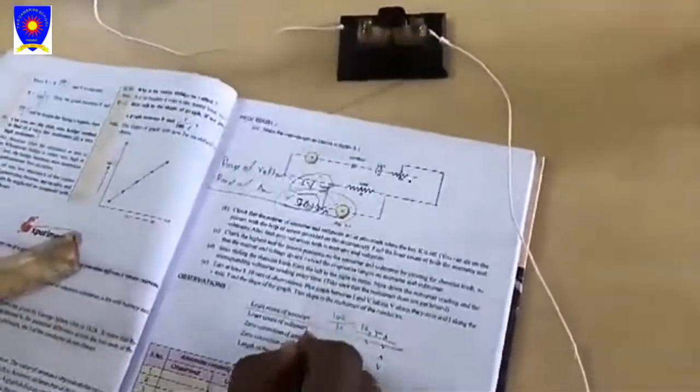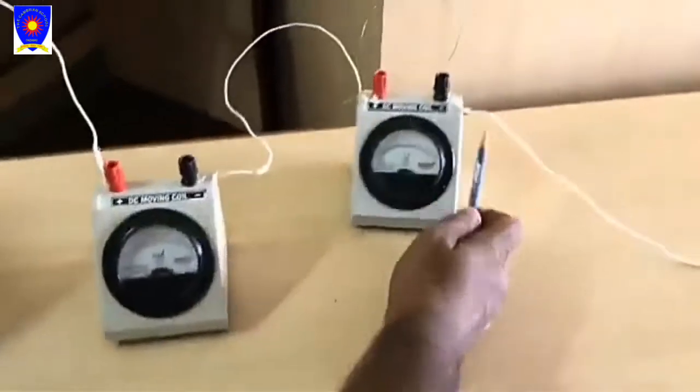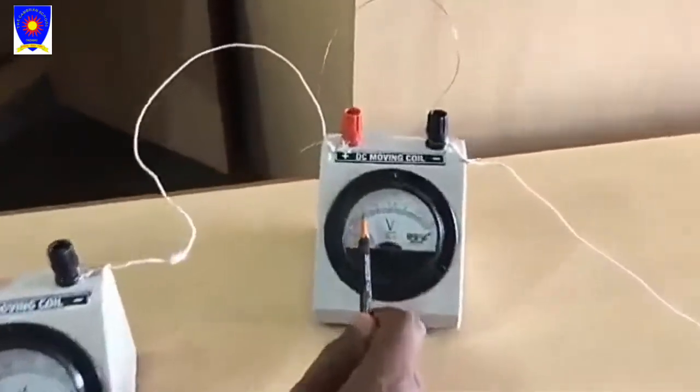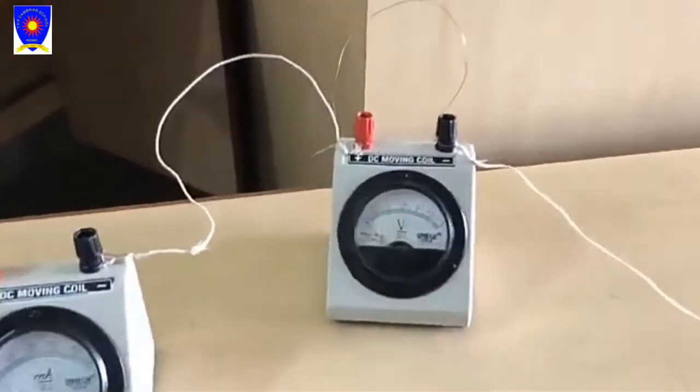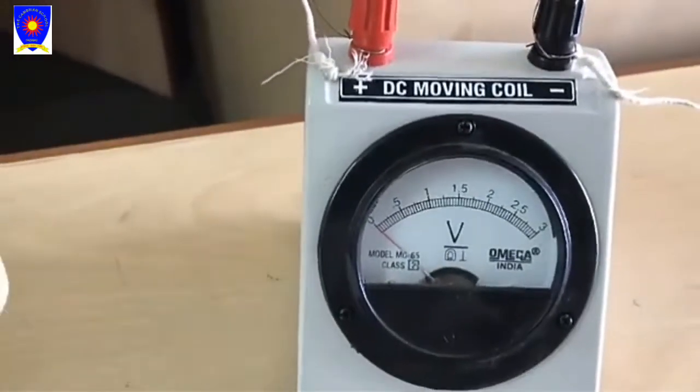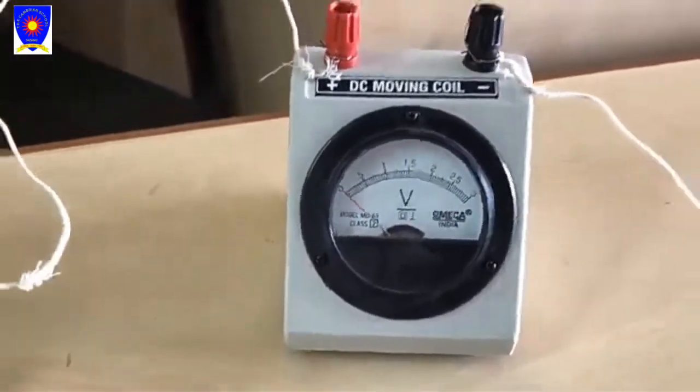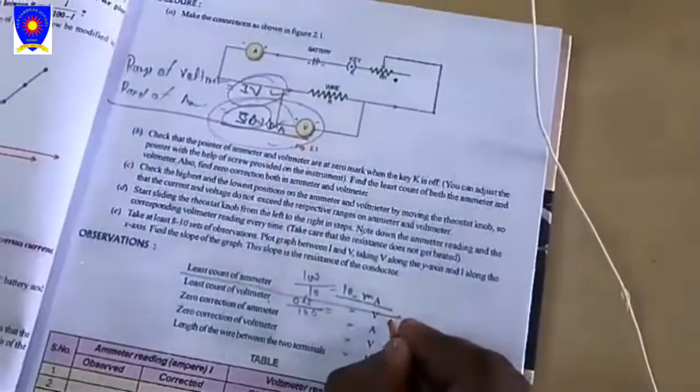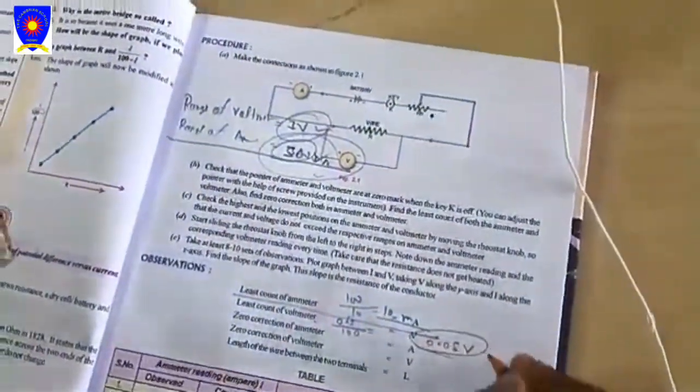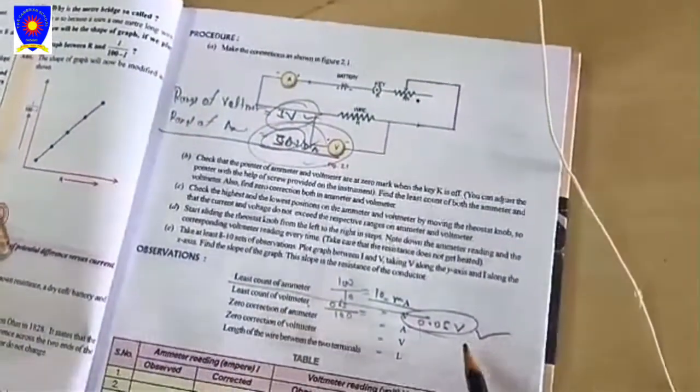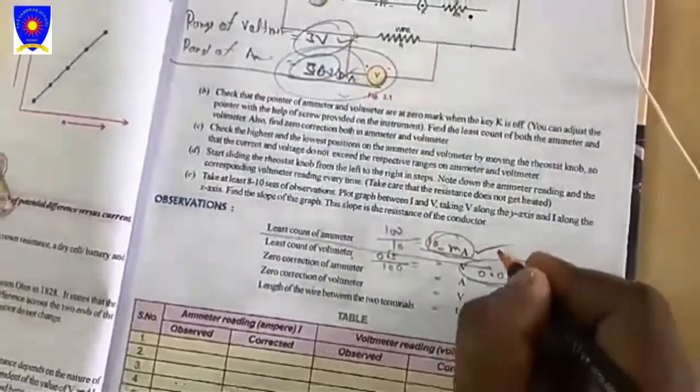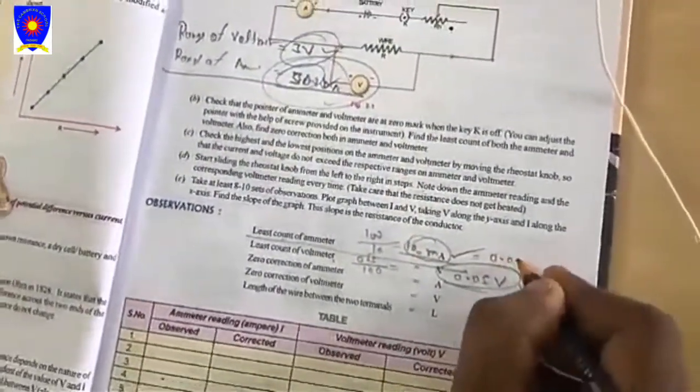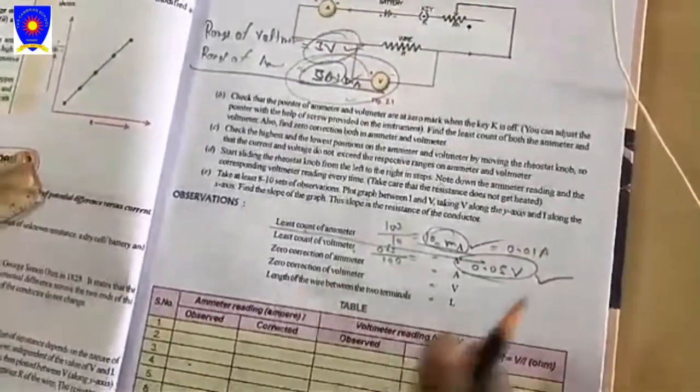Least count of the voltmeter - how can we find it? Its first reading is 0.5, so write 0.5 upon what is the division from 0 to 0.5, which is 10 also. You will get 0.5 upon 10, which is 0.05 volt. This is least count of voltmeter and this is least count of ammeter - 10 milliampere or 0.01 ampere.